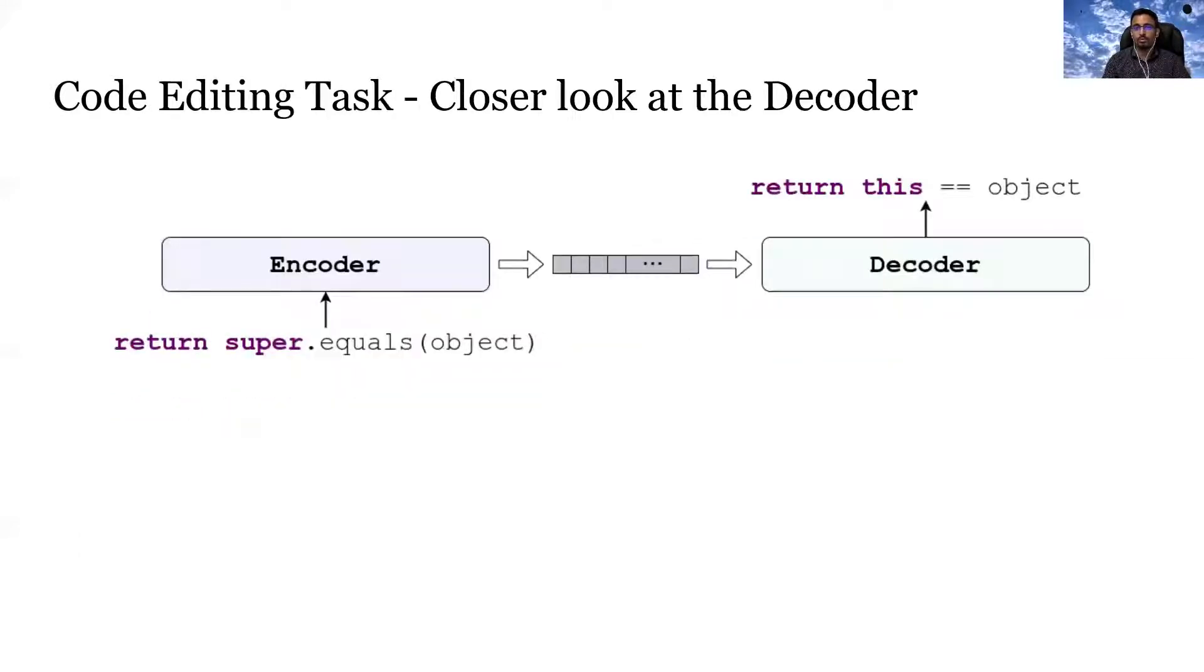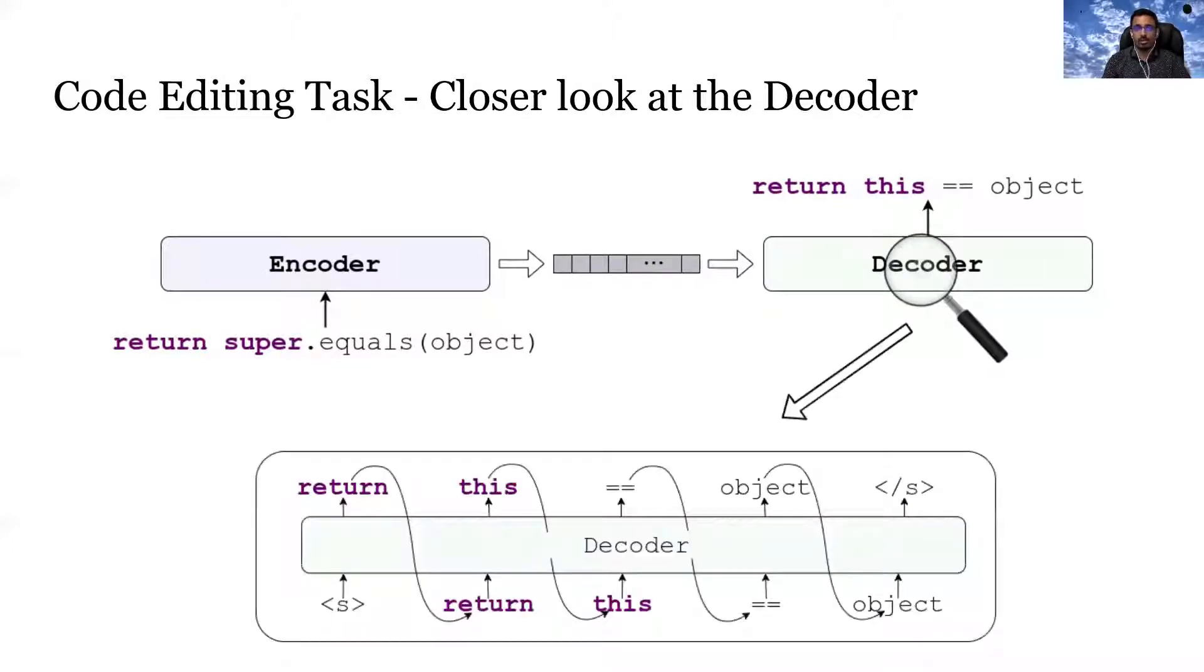Now, let us look at how the encoder and decoder work. The encoder takes in the code before the edit and generates an encoded vectorized representation. The decoder then generates the code after edit from those vectorized representations. A simple way to use such encoder-decoder-based architecture is to use sequence-based encoder and decoder. This sequence-based encoder and decoder treats code as a sequence of tokens.